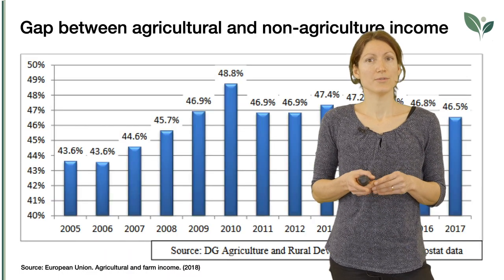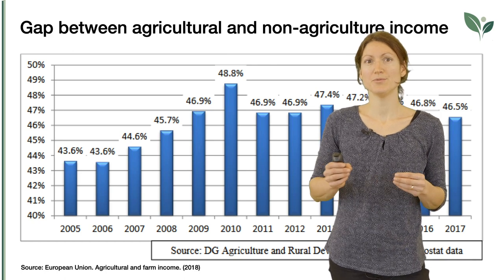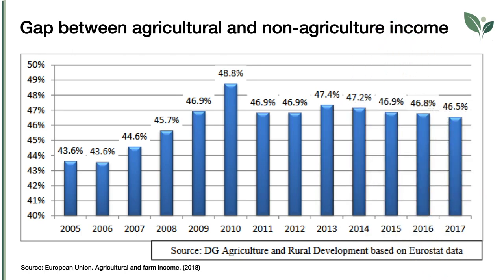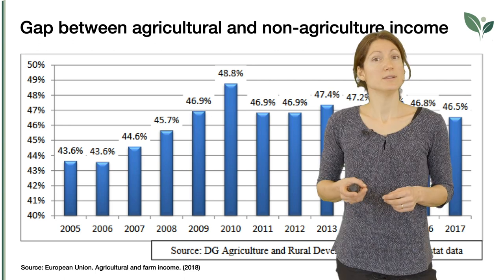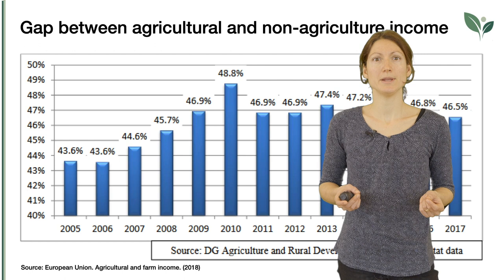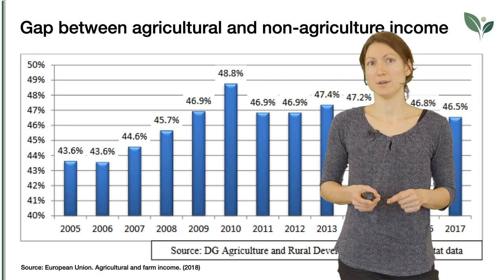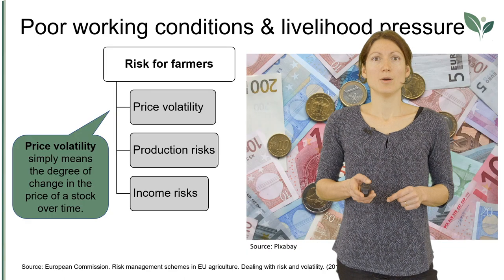In addition to thin farm income margins, there is a big gap between agricultural and non-agricultural income found in the period from 2005 to 2017. Since 2005, wages paid to agricultural employees have been less than half of what employees receive on average across all sectors. Few small farms and only a third of large farms earned the average income of the national economy, whereas the vast majority did not reach this benchmark, even with Common Agricultural Policy support.